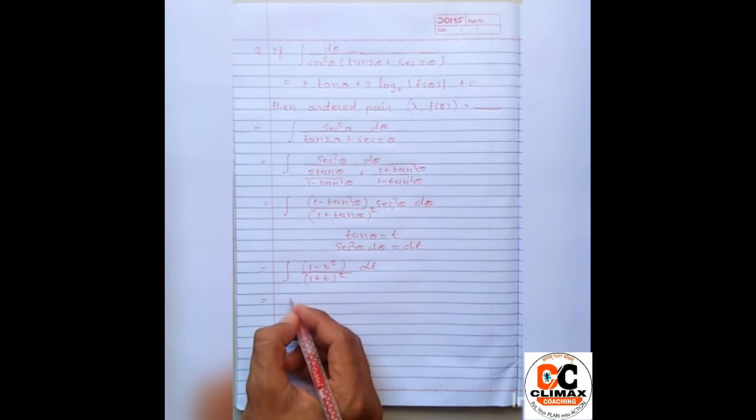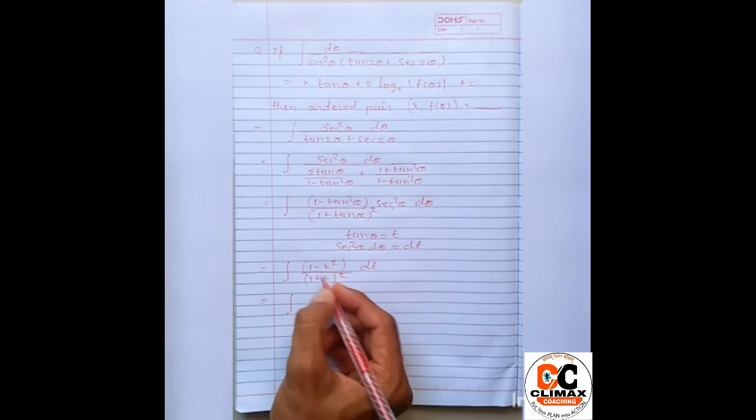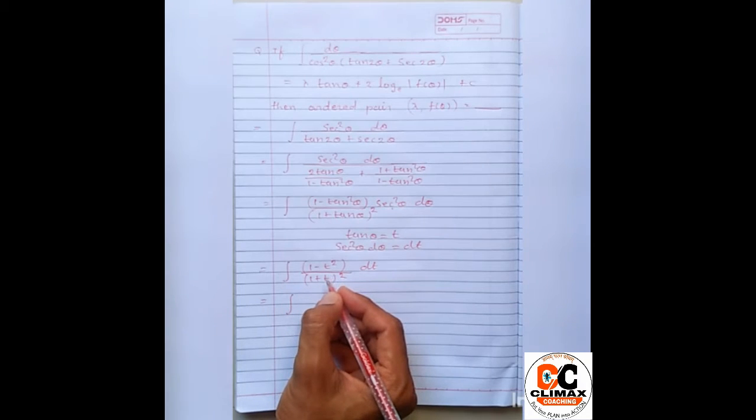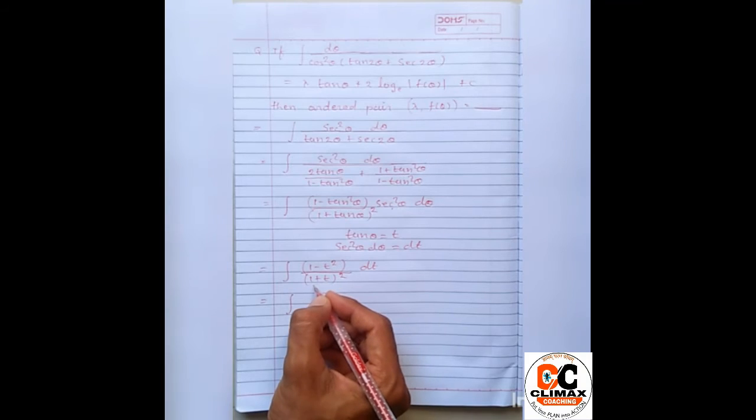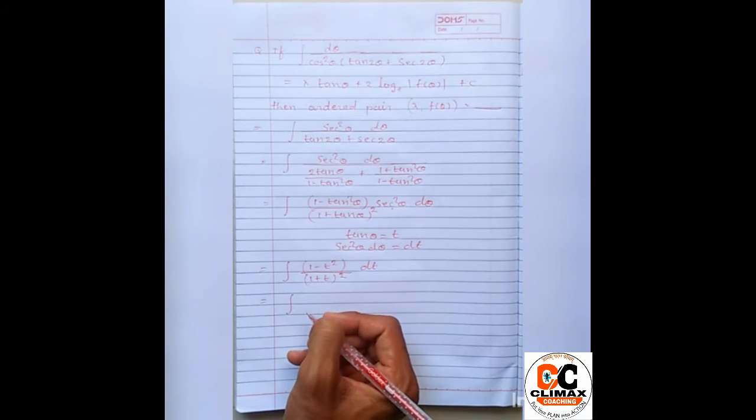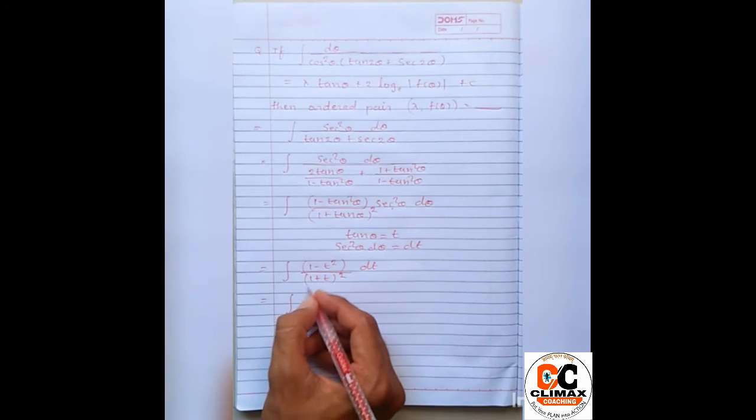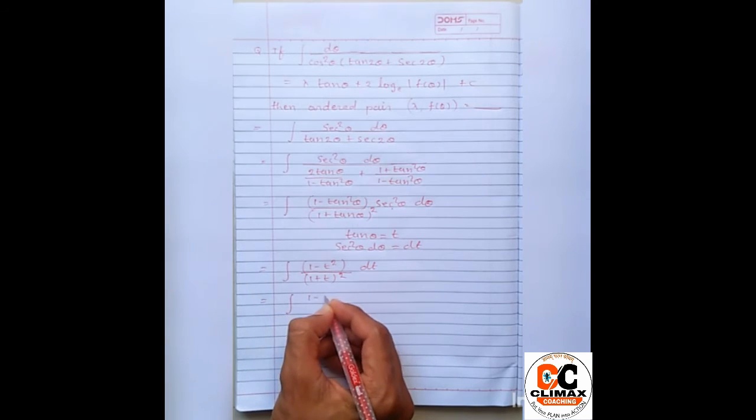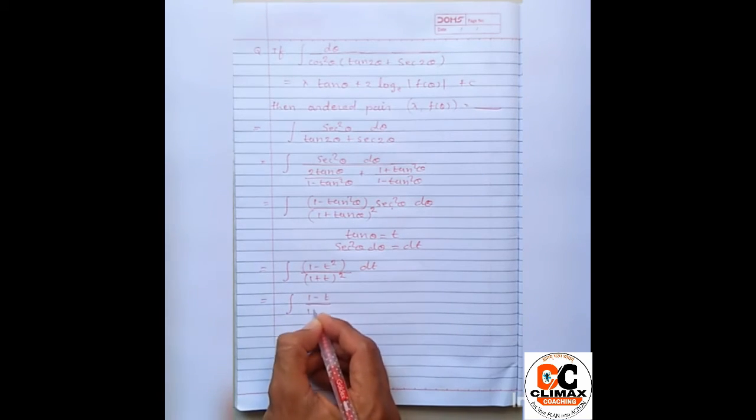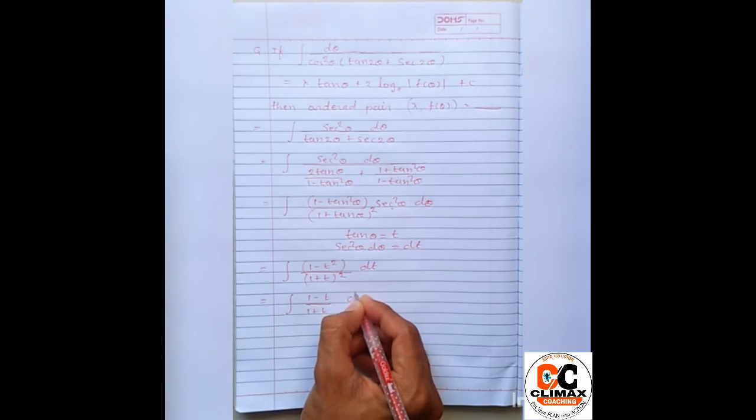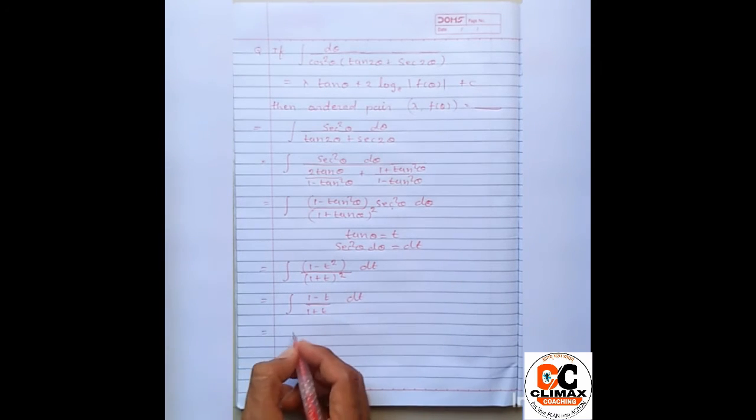Now we have almost done numerator. Numerator mein hai 1 minus T square it will be 1 plus T, 1 minus T and niche hai 1 plus T whole square to ek baar 1 plus T cut ho jaega and numerator will be 1 minus T and this is 1 plus T dt.